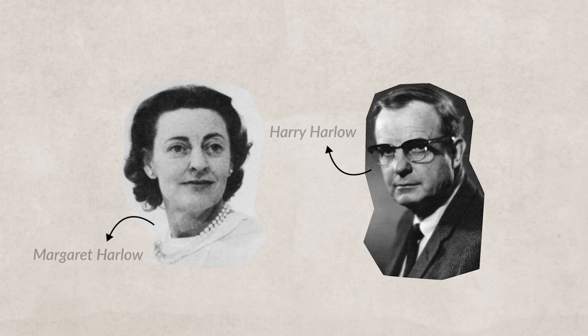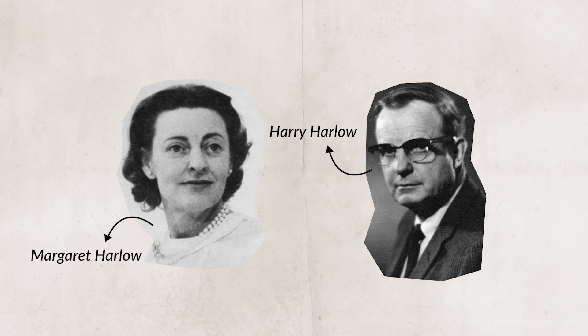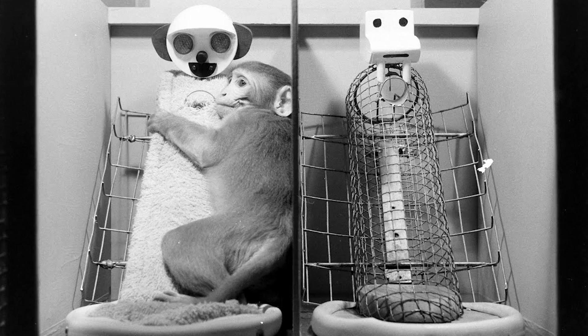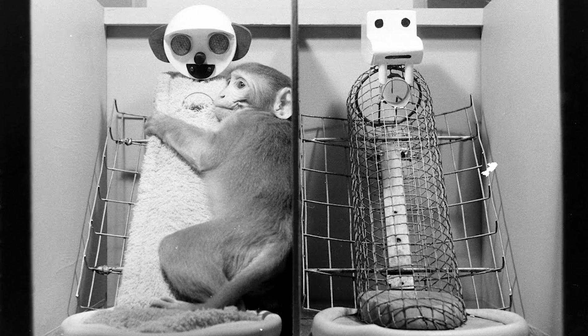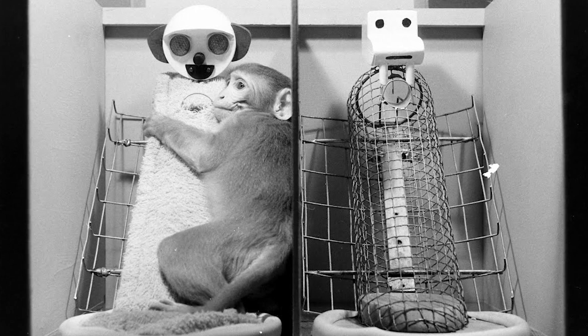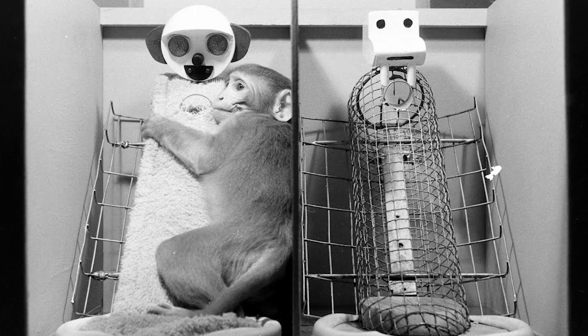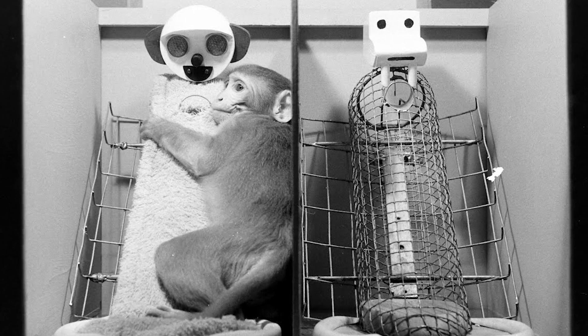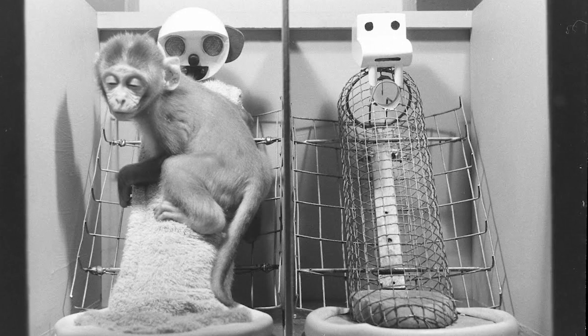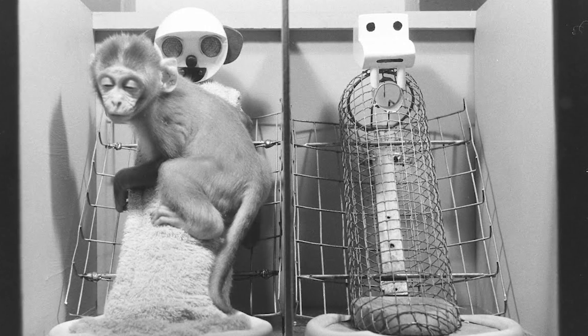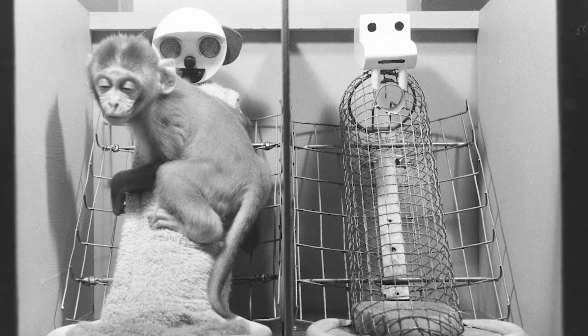Harry Harlow and Margaret Harlow wanted to better understand learning, and to do this, they created an experiment that used monkeys. They separated infant monkeys from their mothers and had the infant monkeys fed by an object made of wires that provided no comfort. They also had monkeys fed by an object that had a baby blanket on it and provided some comfort. What they found was that the monkeys raised with the wire mother would go to it when they needed nourishment, but during stressful situations they would always go to the blanket mother for comfort. This showed that a bond between a child and a caregiver is more than just a need to satisfy nourishment.